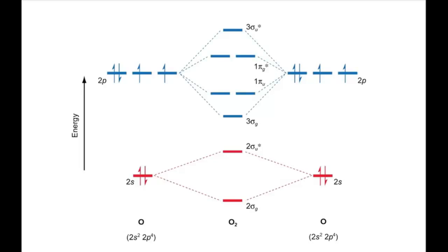Pi interactions are generally weaker than sigma interactions as they occur at 90 degrees to the other atom. This means that the pi bonding orbitals are not as low in energy as the sigma bonding orbital and the pi antibonding orbitals are not as high in energy as the sigma antibonding orbital.